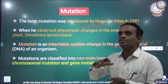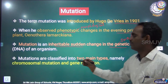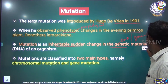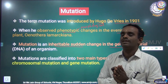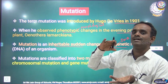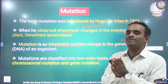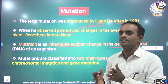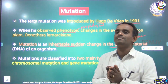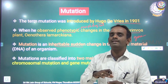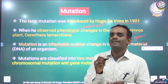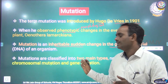Mutations are classified into two major categories: one is chromosomal mutation and another one is gene mutation. If the mutation takes place in the total number of chromosomes or the shape of the chromosomes, that alteration comes under chromosomal mutation. If any changes or alteration takes place in a particular gene or particular base pair, then that type of mutation is gene mutation.